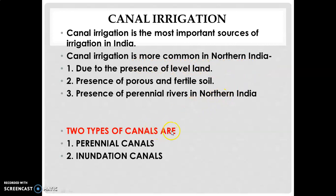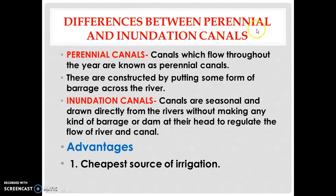There are two types of canals: perennial canals and inundation canals. Perennial canals flow throughout the year, whereas inundation canals are seasonal and do not flow throughout the year. Under perennial canals, a barrage is constructed across the river, but in inundation canals no barrage or dam is built.